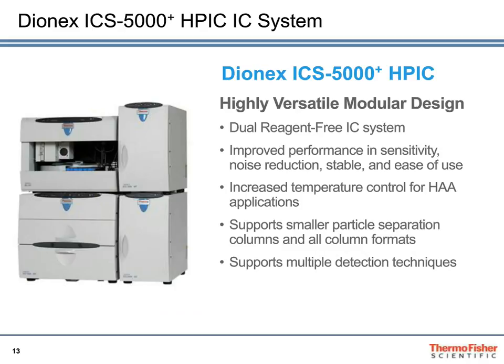Here is our ICS-5000, a high-pressure ion chromatography system. It's a highly versatile modular design and a dual reagent-free system, optimized for improved performance and sensitivity, noise reduction, stability, and ease of use. It is selected for this application because of its increased temperature control for HAA applications. It supports smaller particle separation columns in all formats from 0.4 mm ID, 1 mm ID, 2 mm ID, and 4 mm ID, as well as 3 and 5 mm in some formats. It supports multiple detection techniques, including conductivity detection, UV, and of course the mass spec.